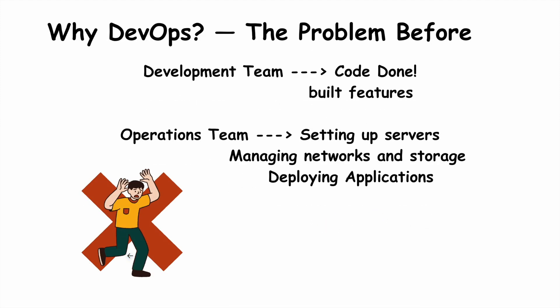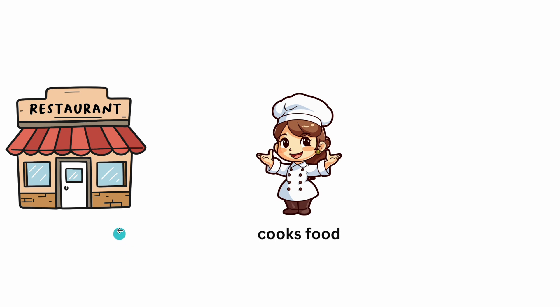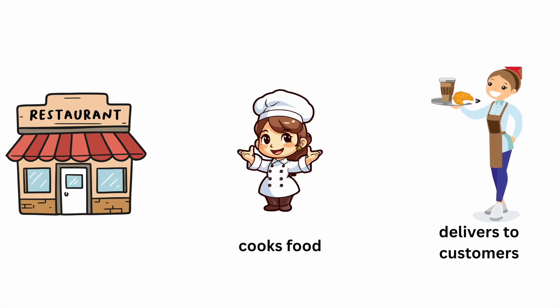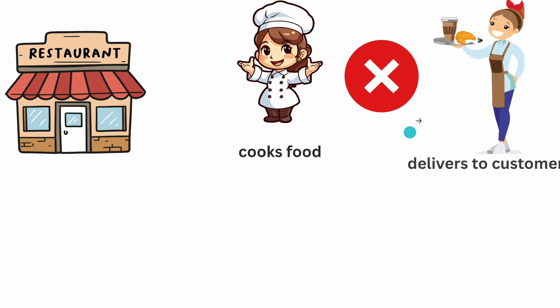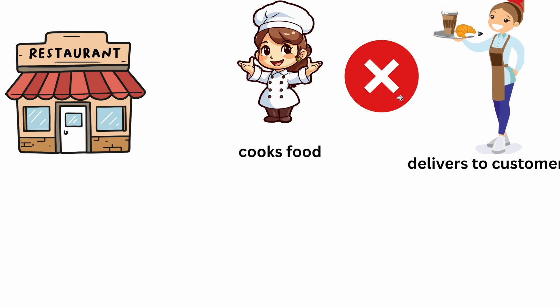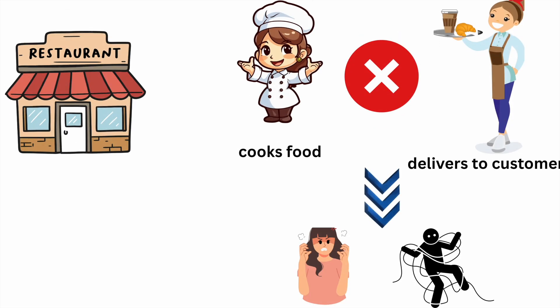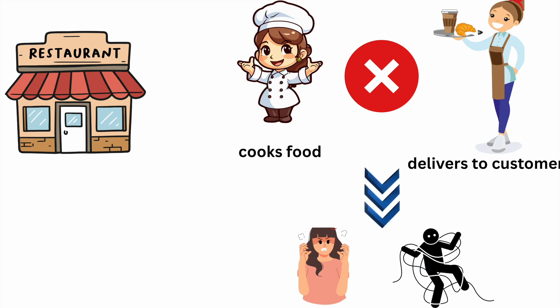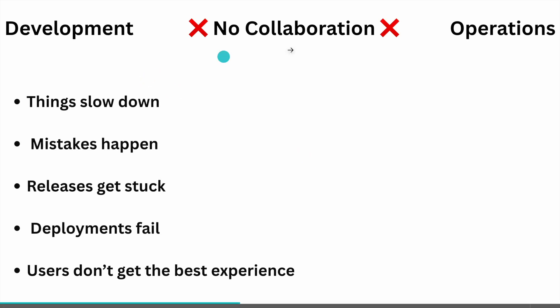They had different goals and rarely communicated. Let's imagine a restaurant: the chef cooks food and the waiter delivers it to the customer. But what if the chef and waiter don't talk to each other? Orders get mixed up, food comes out late, and you end up with customer frustration. It is the same in software when developers and operations don't collaborate.